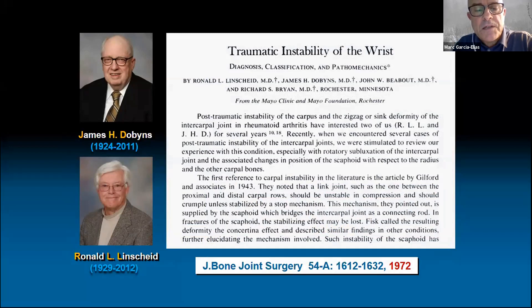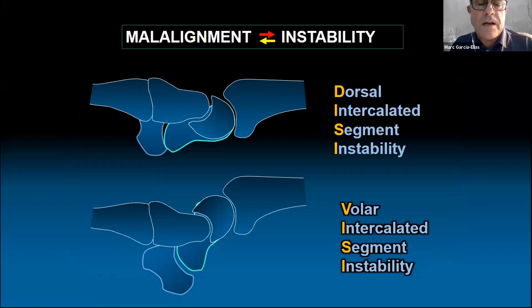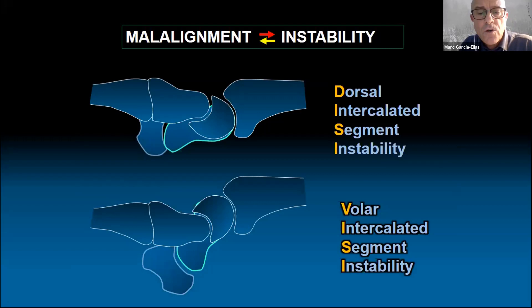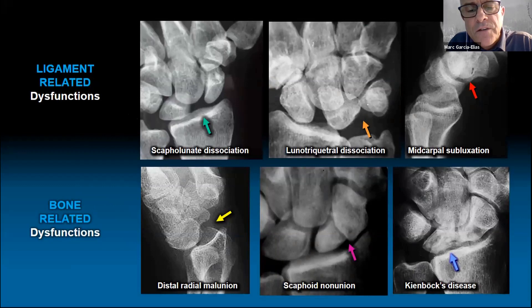From their seminal study, we learned that wrist instability and wrist misalignment were somehow interconnected. Two major groups of misalignment were analyzed: the DISI misalignment and the VISI misalignment, known as dorsal intercalated segment instability and volar intercalated segment instability — the lunate rotated into extension or flexion respectively. We also learned that carpal misalignment may result from ligament rupture, joint incongruity, unresolved fractures, or an alteration of the size and shape of the joints involved.